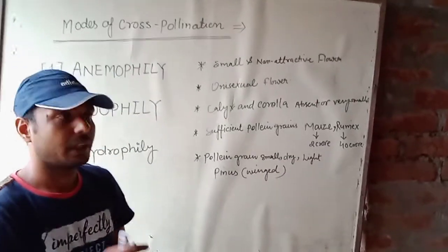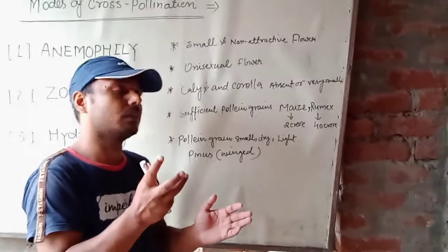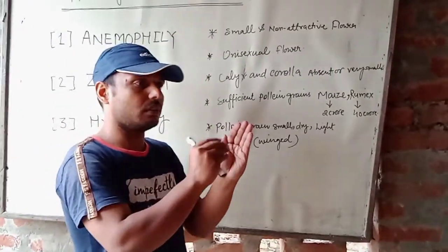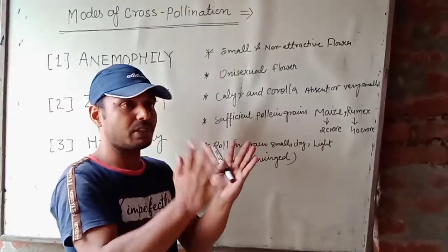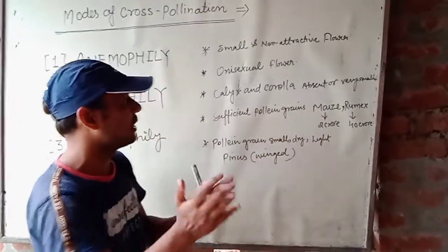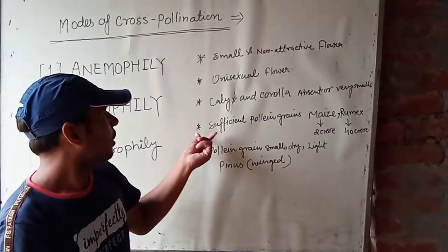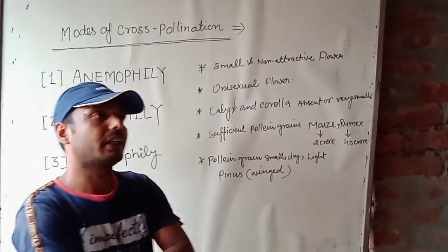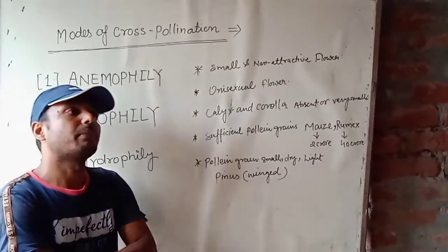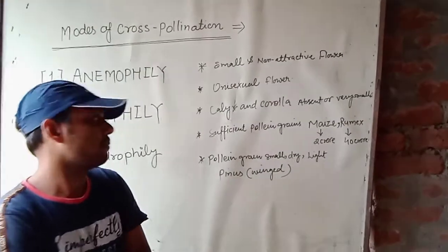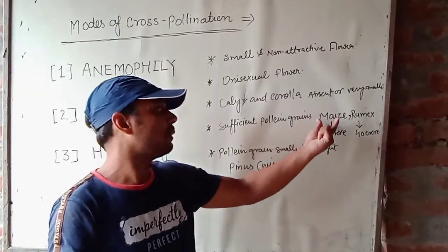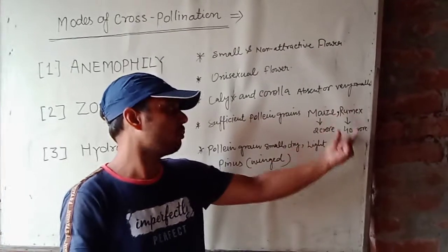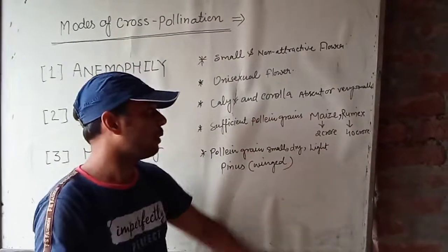Fourth characteristic: sufficient pollen grains are present in the anther of anemophilous flowers. For example, maize has near about 2 crore pollen grains, and rumex has about 40 crore pollen grains.